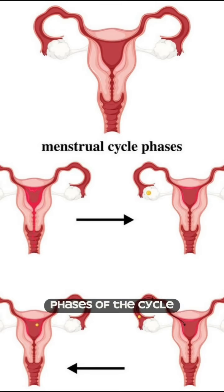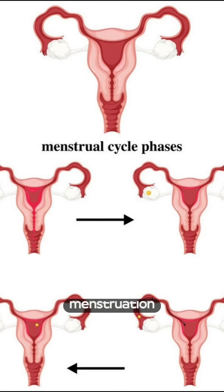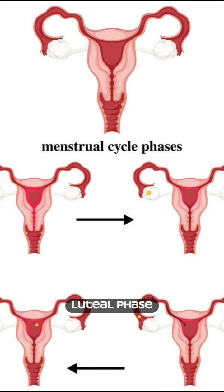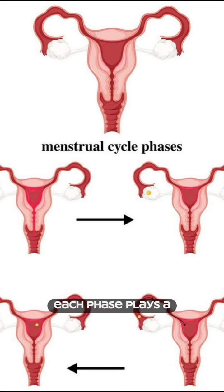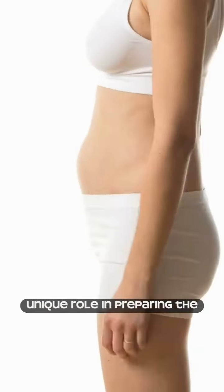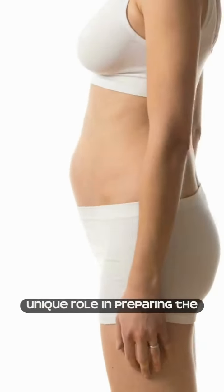Phases of the cycle — there are four main phases: menstruation, follicular, ovulation, and luteal phase. Each phase plays a unique role in preparing the body for pregnancy.